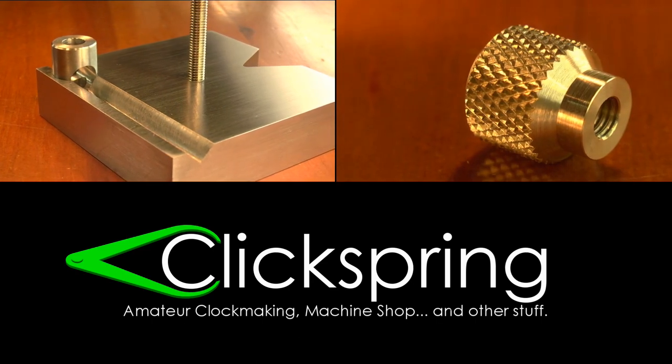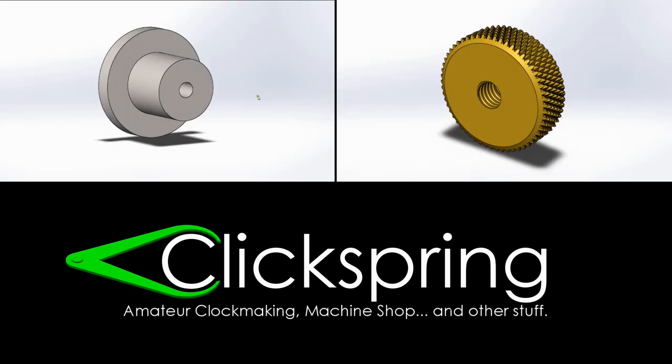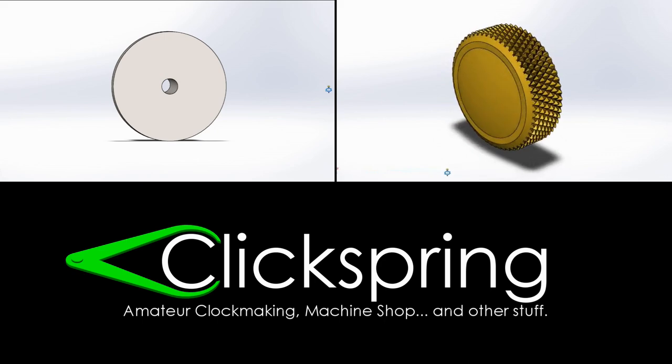In the previous video I made the base and clamping nut for the finger plate tool. In this video I finished that build by making the drilling jig bushings, the knurled thumb wheel, as well as this clamping finger.